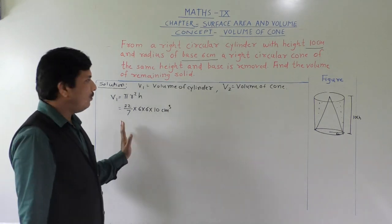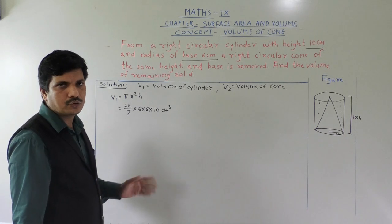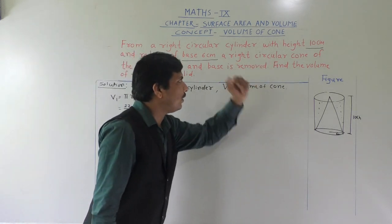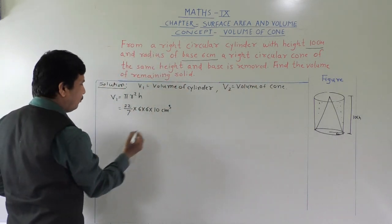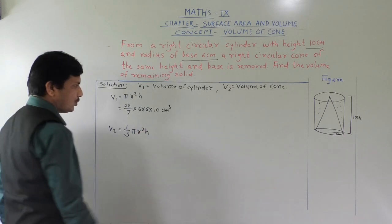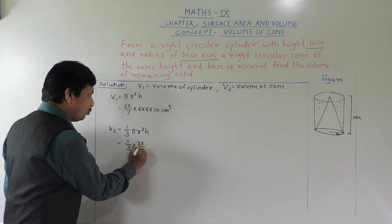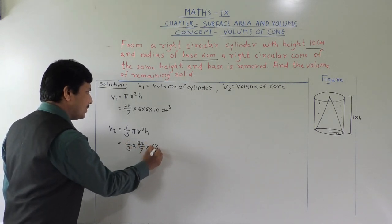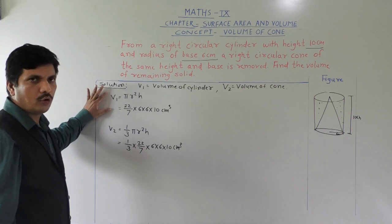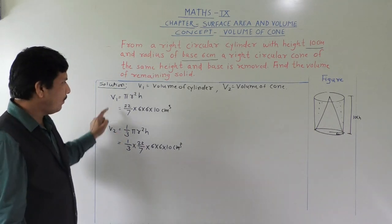Now we will find out volume of cone. We can keep the cylinder volume as-is since we are going to do subtraction later and this part is common to both. V2 equals volume of cone equals 1/3 π R² H. So here: 1/3 into 22/7 multiplied by radius 6 multiplied by 6 into height 10 — same height and same base.